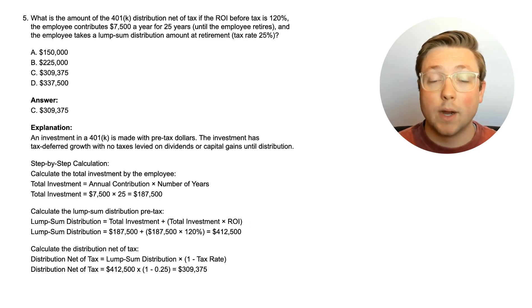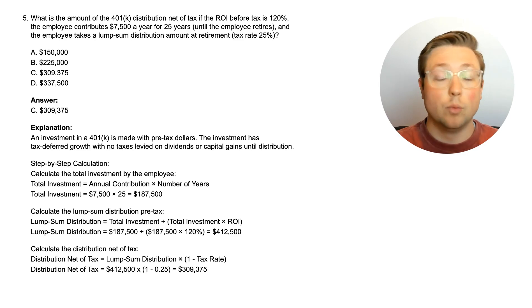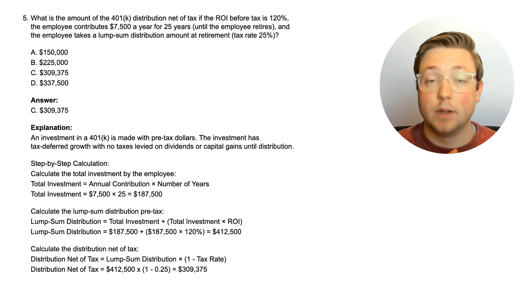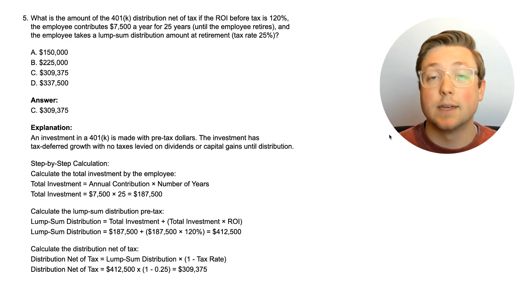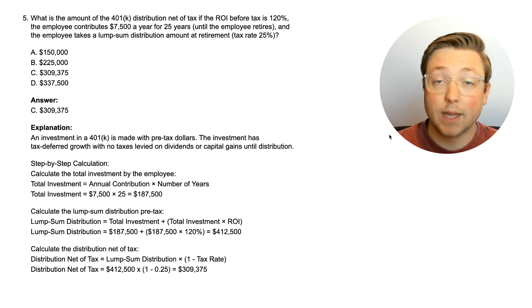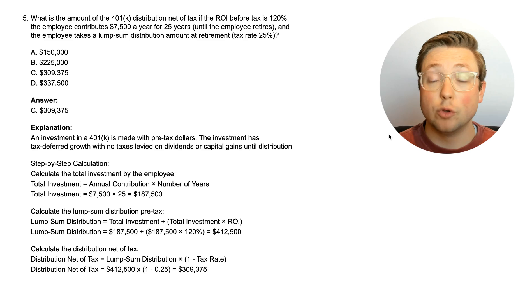We've looked at ROI in a whole bunch of different circumstances. You can either calculate the ROI, or you can use the ROI to figure out other things — like the total tax, a lump sum distribution, or the ending retirement balance. We also looked at Roth IRAs, which are post-tax investments, and 401ks, which are pre-tax investments — the two different situations you'll deal with when looking at investment options and ROI.